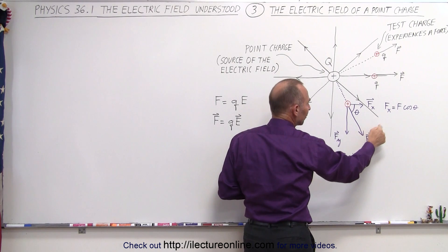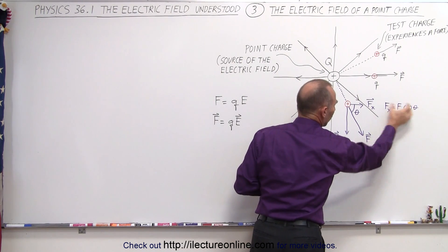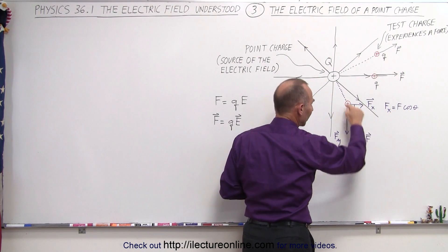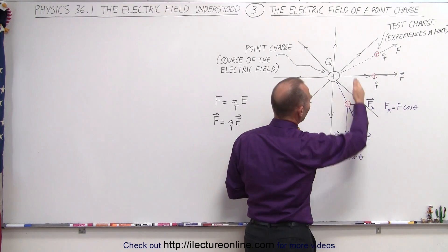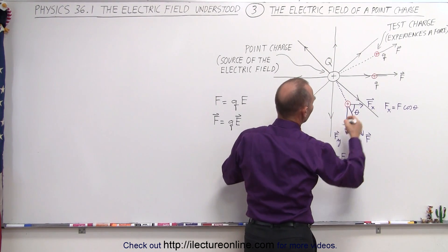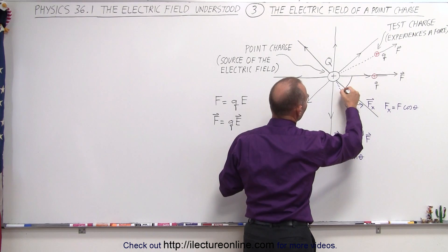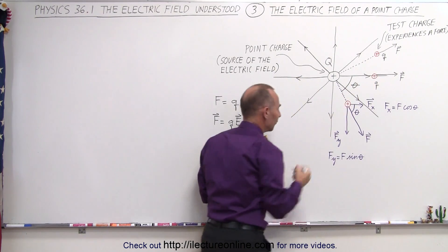We can find that by taking the force F and multiply that into cosine for the x component or the sine of the angle for the y component, the angle of course being this angle right here, which is the same as this angle right here. That would be the angle theta for this example.